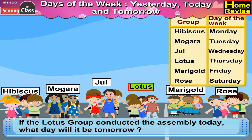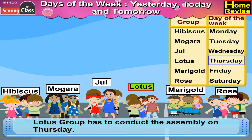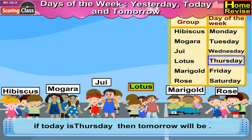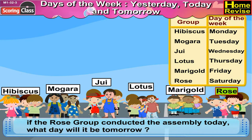If the Lotus group conducted the assembly today, what day will it be tomorrow? The Lotus group has to conduct the assembly on Thursday. So tomorrow will be Friday.